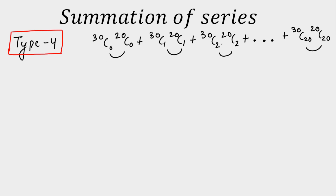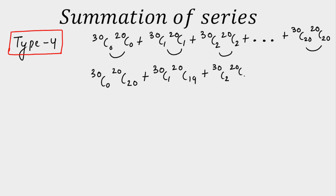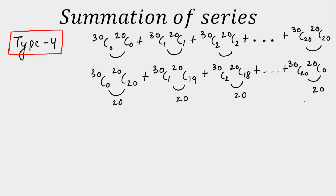The key step is to make the sum of the lower indexes constant throughout. Using nCr = nC(n−r), rewrite each term: 30C0·20C0 becomes 30C0·20C20, 30C1·20C1 becomes 30C1·20C19, 30C2·20C2 becomes 30C2·20C18, and so on till 30C20·20C0. Now check — the sum of the lower indexes is 20 for every term. The moment the sum of the lower indexes is constant, we can compare coefficients of x^20.